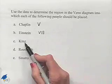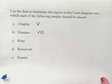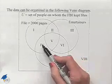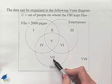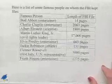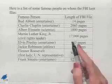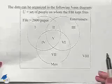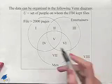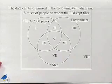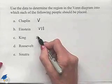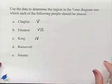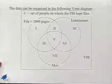Moving on, we'll look at Martin Luther King Jr. He was not an entertainer; he was a man. We're trying to determine then if he's in region four or seven — that depends on the length of his file. Martin Luther King Jr. had 17,000 pages, which is certainly larger than 2,000, so he's going to end up in region four.